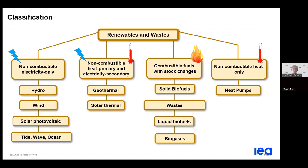Coming to the second and fourth groups, the primary form is heat. For the second group, production is considered in the form of heat because there are two possible outlets: heat that can be directly used — for example, using geothermal heat for district heating — or heat that can be used to generate electricity, for instance in a solar thermal power plant. The fourth group includes heat extracted from the environment and used in heat pumps; since this cannot be converted into electricity, it is separated into its own category.